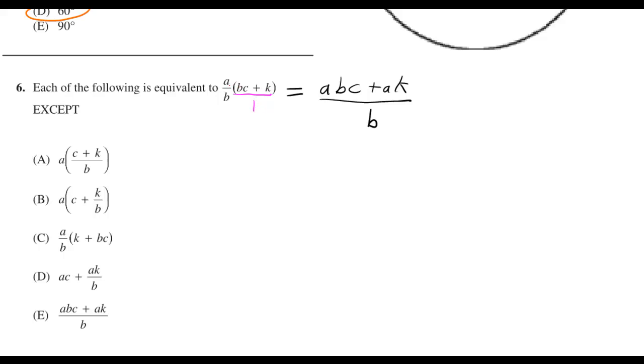I thought about this as multiplying two fractions. If you multiply the two tops together you got to use the distributive property and you get abc plus ak. Then you multiply the b and the one and you get b. You don't need to put the over one when you got more experience.